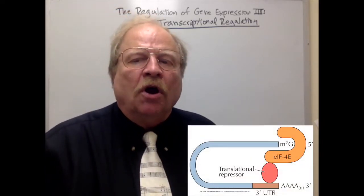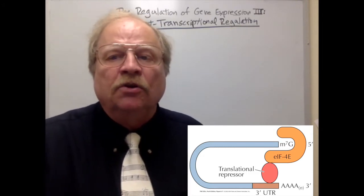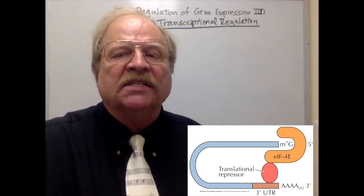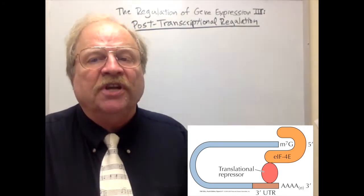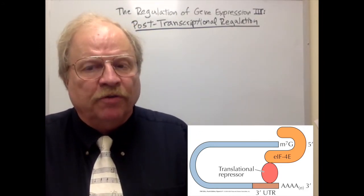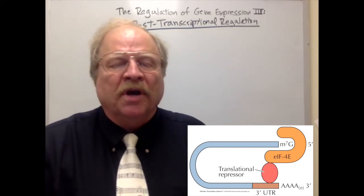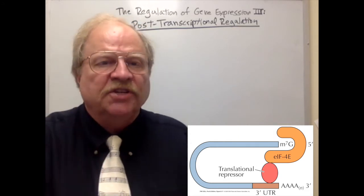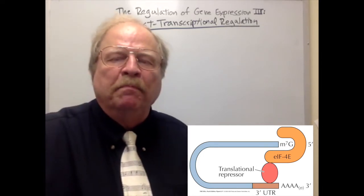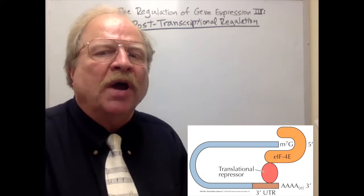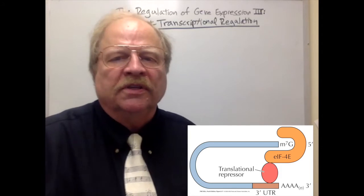This other diagram shows that there are other repressors of translation that do not bind to the 5' UTR, but actually bind to the 3' UTR. Remember that in order to get proper translation, you have to have the 5-methylguanosine cap on the 5' end and you have to have the 3' poly-A tail, and that initiation process in eukaryotes involves both of those. So you can actually, by having a protein bind to the 3' UTR, also turn off translation so translation doesn't occur.